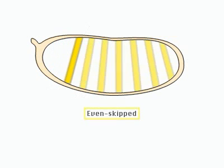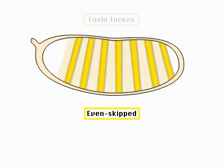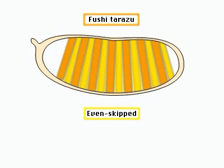Stripe 2 is one of seven stripes of even-skipped protein, which alternate with seven stripes of Fushi tarazu protein. Both proteins are transcription factors encoded by pair-rule genes.